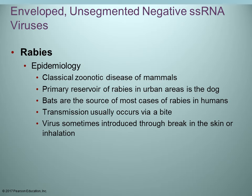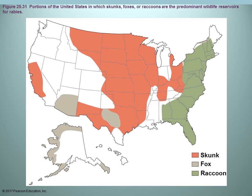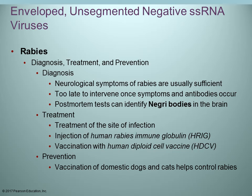The main reservoir of rabies depends on location: in urban areas it's often dogs; in the wild, most mammals can serve as reservoirs. Transmission usually occurs by bite, providing a break in the skin. In the United States, wild animals such as skunks, foxes, raccoons, and squirrels have been known to carry the rabies virus.